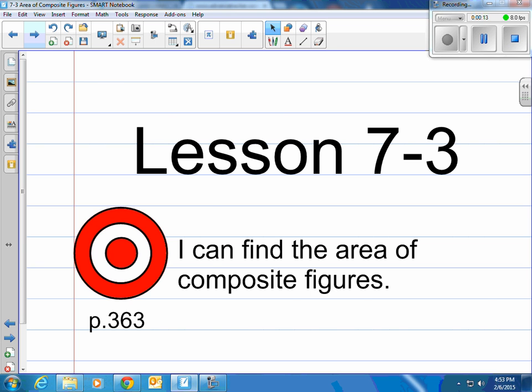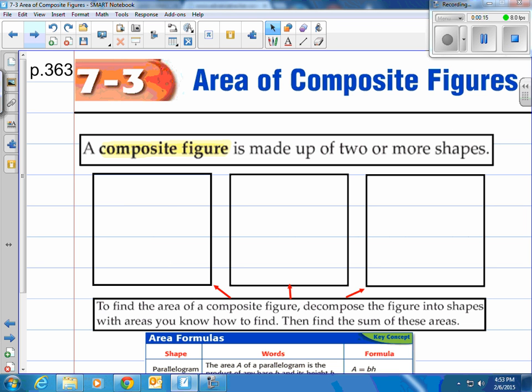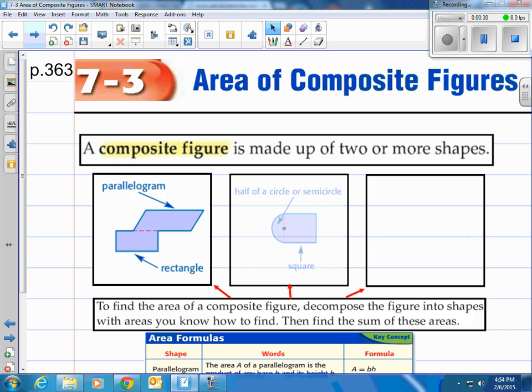Now we've been talking about polygons, but what are composite figures? Composite figures are made up of two or more shapes. So when they're odd shapes, what can we do? Well, let's take a look at a couple examples here. These are shapes obviously that we don't have formulas for, but we do have formulas if we break them into pieces.